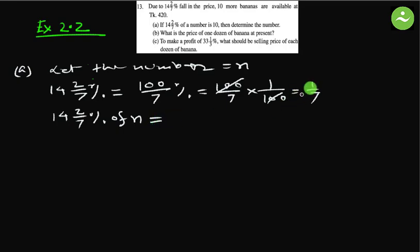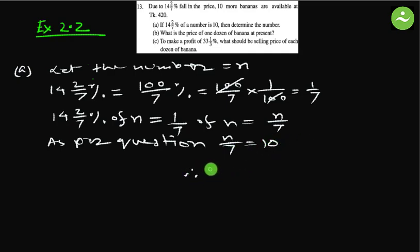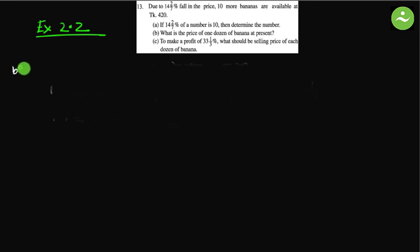Therefore 14 and 2/7 percent of n equals 1/7 of n, which is n/7. The question says this equals 10, so n/7 = 10. Multiplying both sides by 7, we get n = 70. That is the answer to part (a).